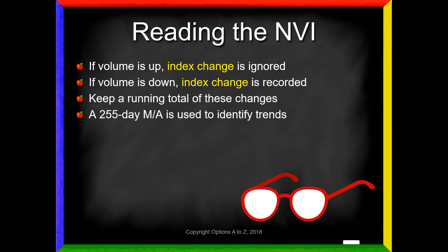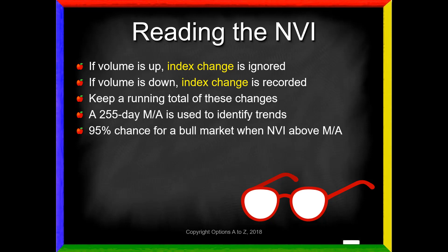Fossback states there is a 95% chance of a bull market when the NVI is above the 255-day moving average, and a 53% chance of a bear market when it's below. I'm not certain how rigorous those studies were, but the key takeaway is there is an overwhelmingly large probability the market is in a bull market when you are above the NVI moving average. That's especially important for those managing long-term investments.